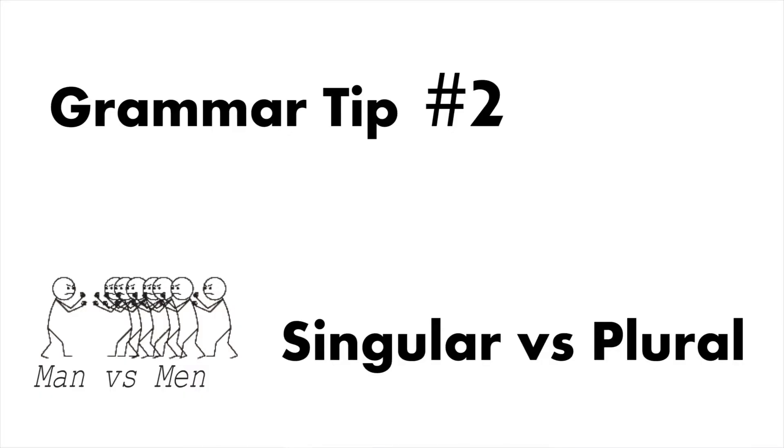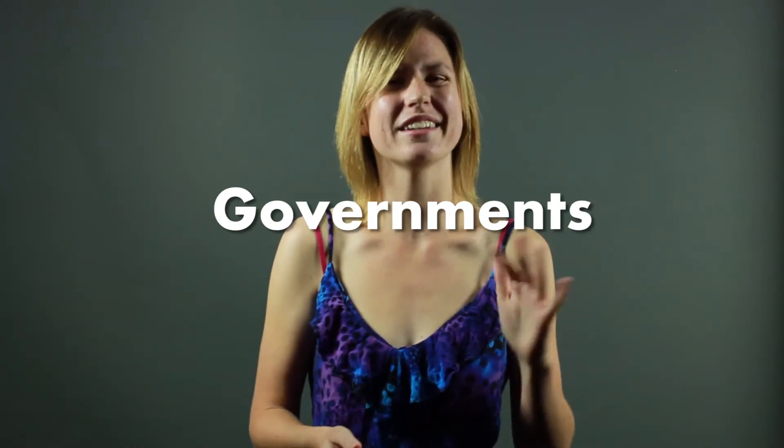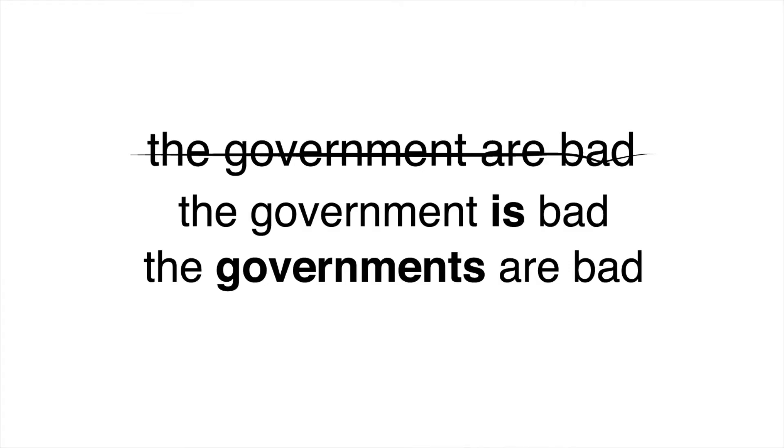That brings me to our next important topic: singular words versus plural words. This is a concept you learned ages ago, so you'd think it'd be pretty easy, right? Well, as it turns out, a lot of students really struggle with these types of questions. If you saw the sentence 'the government are bad,' you might think it looks okay — after all, there are multiple people involved in the government, so it can be pretty tempting to accompany the word with a plural verb. However, the word 'government' is, in fact, singular. While there are many people in Congress, there is only one government. The plural form of this word would be 'governments.' See? It can be a little tricky, but you need to make sure you can spot these subtle nuances.